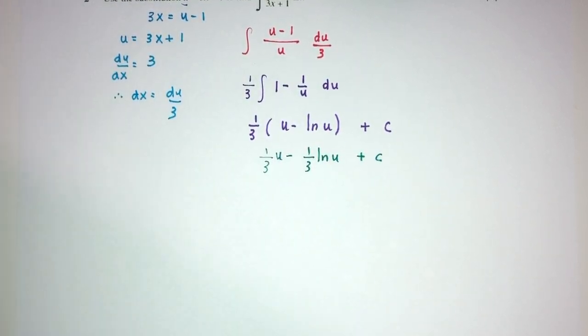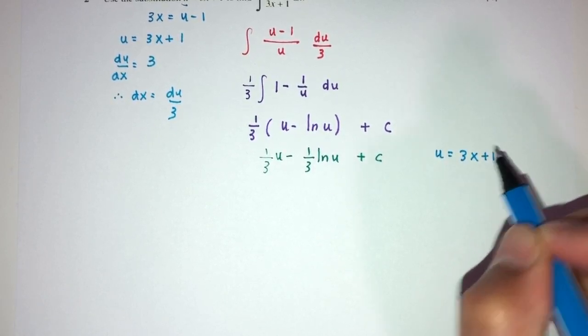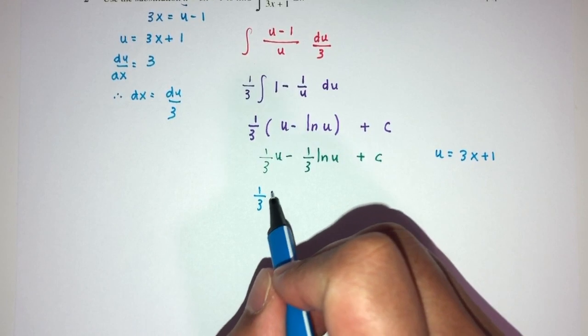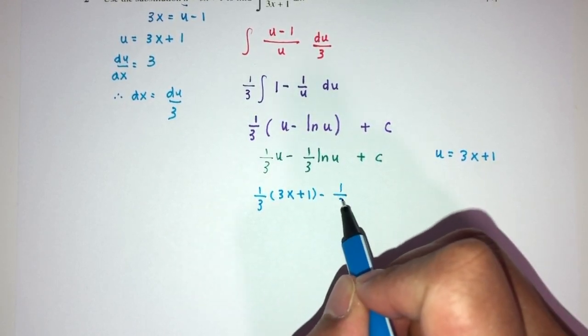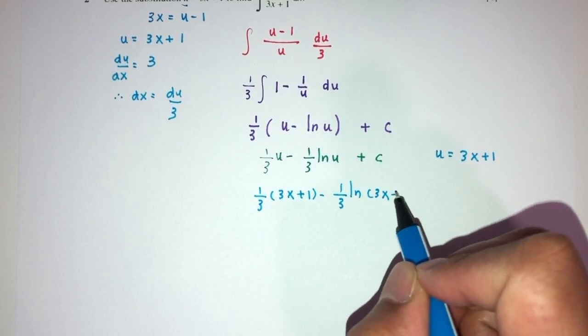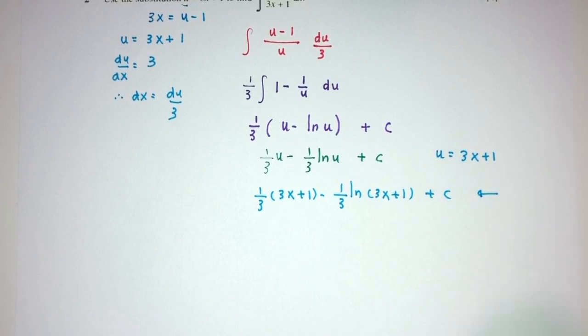Don't forget, what is u? u is 3x plus 1. Bring it back: you will have 1 over 3 times 3x plus 1 minus 1 over 3 ln of 3x plus 1 plus c. This is your answer for question number 2.